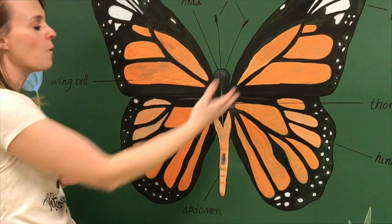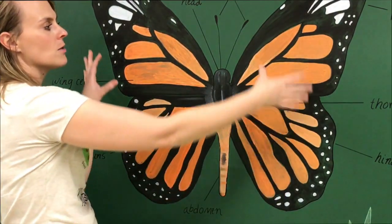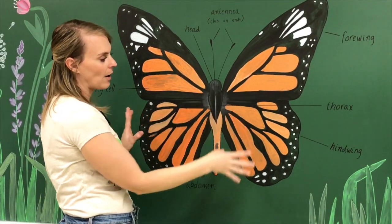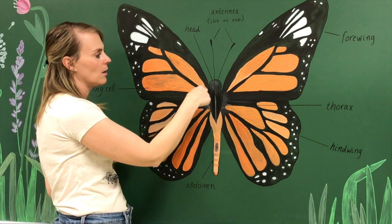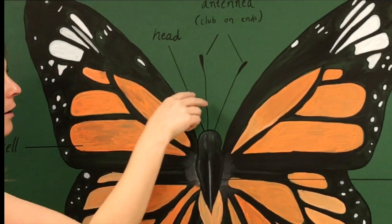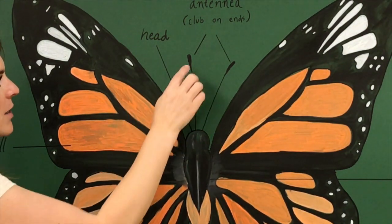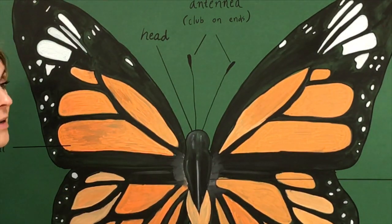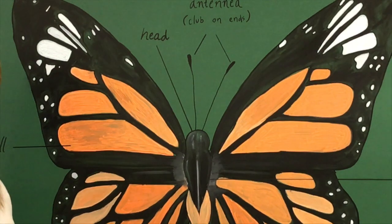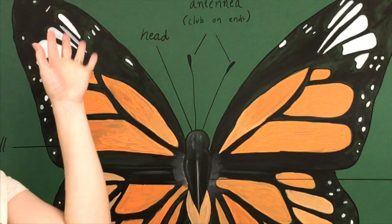Our butterfly has four wings. It looks like it only has two wings, but it actually has two wings on the top called the forewings — meaning they're in the front — and two wings in the back called the hind wings. On the butterfly's head, they have specialized organs called antennae that help the butterfly to hear and to smell. These antennae are special to butterflies because they have knobs or clubs on the ends — that's distinctive to butterflies only. If we're trying to decide if it's a moth or a butterfly: if it's a butterfly, it's going to have those knobs; if it's a moth, their antennae tend to look like a feather.